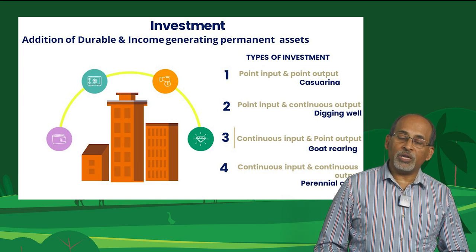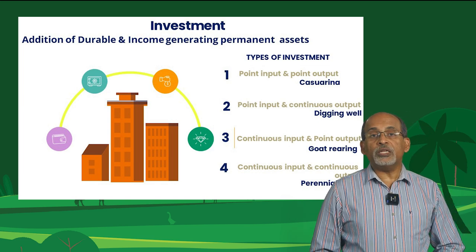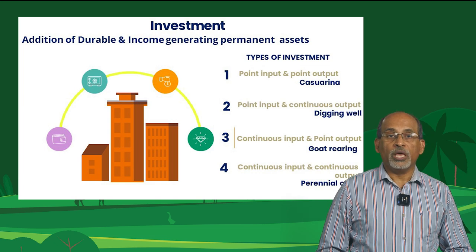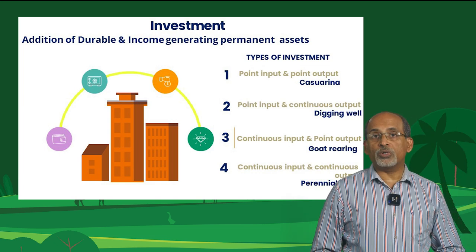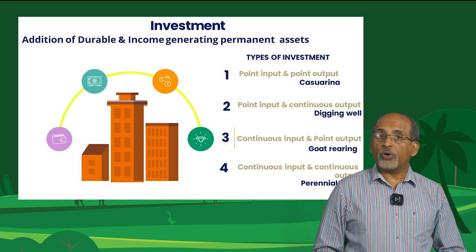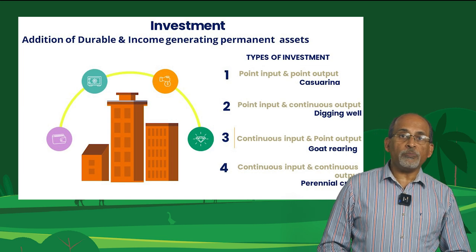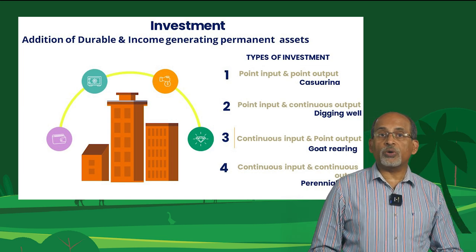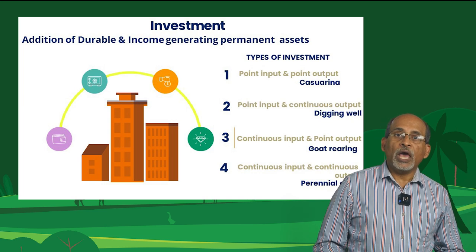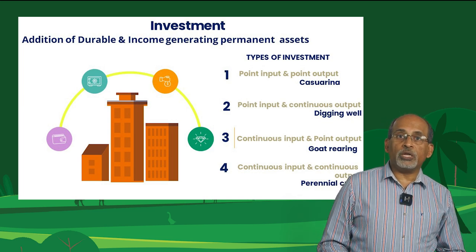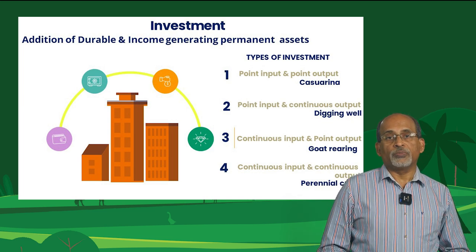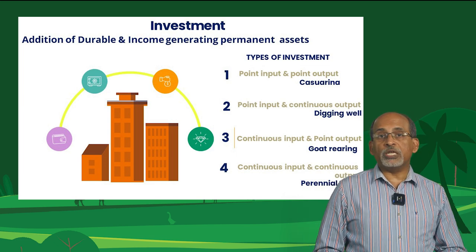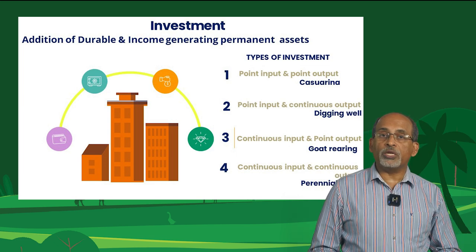The third type of investment is continuous input and point output. For example, sheep or goat rearing for meat purpose. In sheep or goat rearing, we have to incur costs on inputs continuously and the output will be obtained once at the end. That is why it is called continuous input and point output.